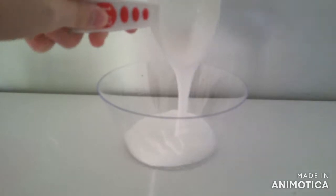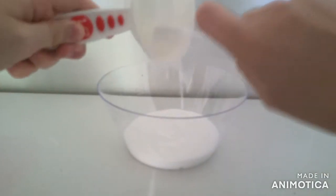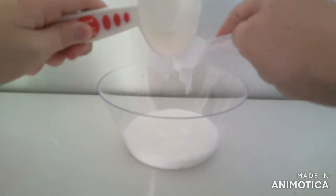Okay, so now that we've made our activator we can work on the real slime. Start with half a cup of white PVA glue and try to get as much into your bowl as you can.